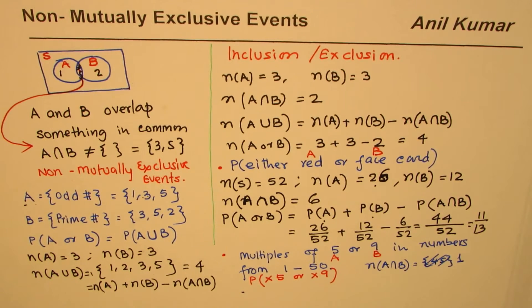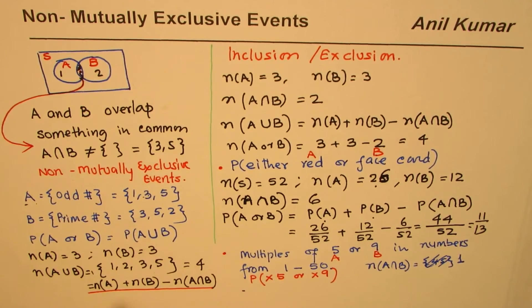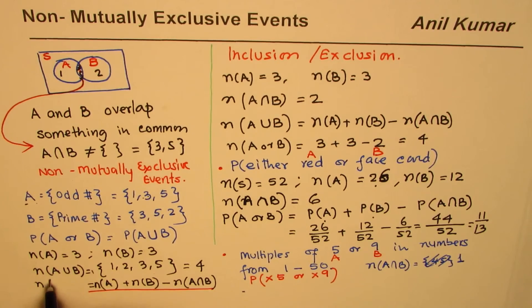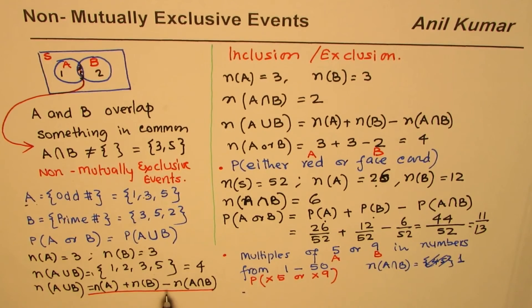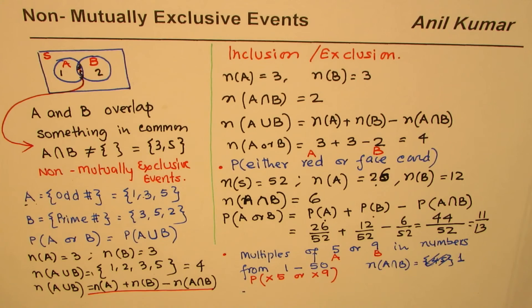So we saw a few cases of non-mutually exclusive events. These are events where two or more events have common elements. Those common elements, when we combine their counts, are included twice and therefore must be excluded. That is why we get the formula where the number of elements in A or B equals N(A) plus N(B) minus N(A∩B). I hope that helps you understand the basic concept of non-mutually exclusive events. I'm Anil Kumar - thank you and all the best.